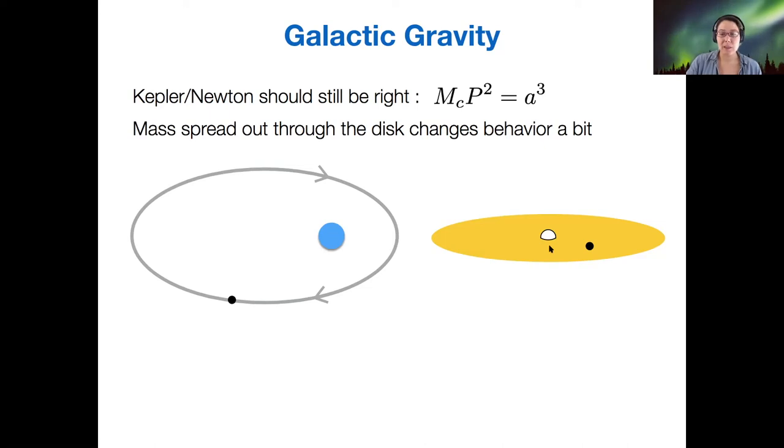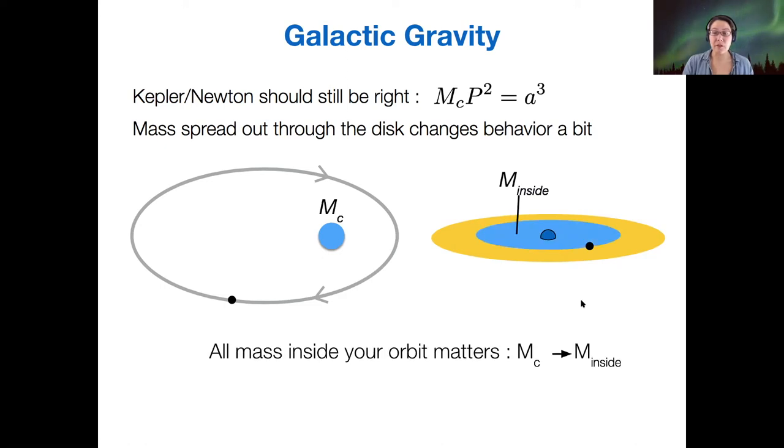So this mass that's spread out within a disk does change the equations a little bit, but it turns out that we can, for the most part, still do a very good job at estimating the mass if we really just assume that all of the mass that we're calculating is as if it's concentrated at a single point.